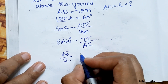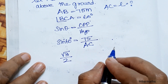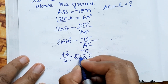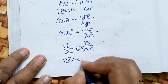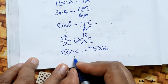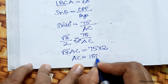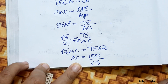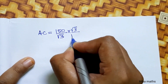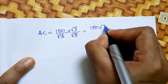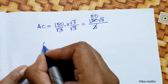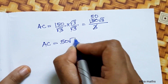The value of sin 60 degrees is root 3 over 2. So root 3 over 2 equals 75 over AC. Cross multiplying, AC equals 75 into 2 divided by root 3, which is 150 divided by root 3. Rationalizing by multiplying root 3 over root 3, AC equals 50 root 3 meters.